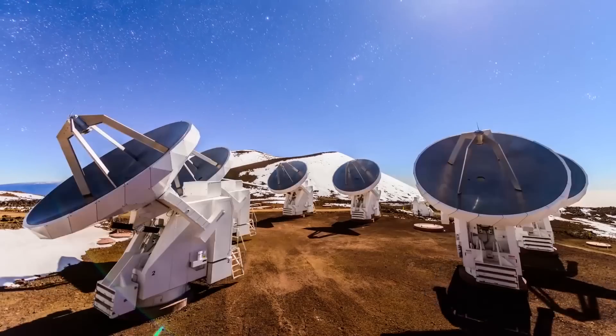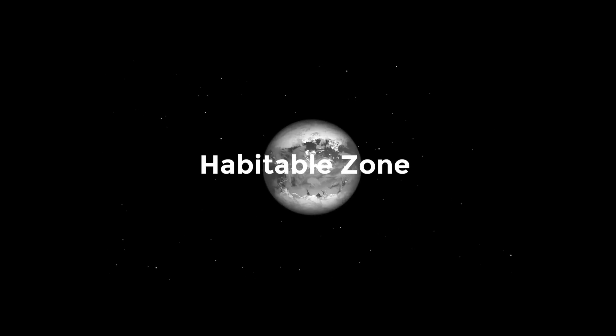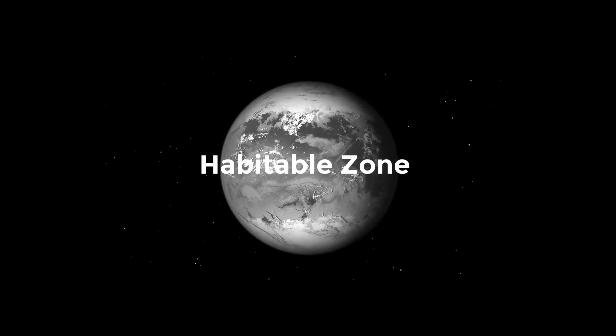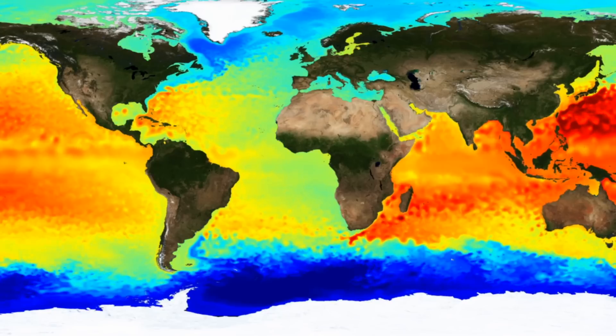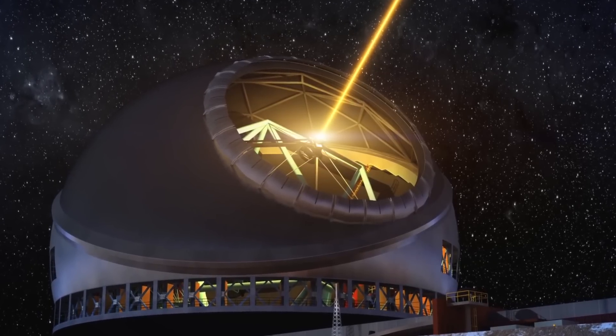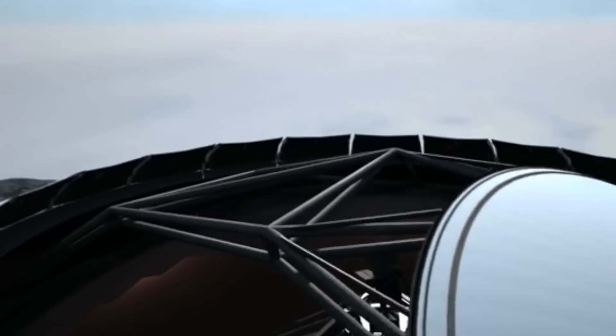TMT will therefore have three times the resolution and detail of existing telescopes. Astronomers will soon be able to identify planets around other stars in the habitable zone, a distance from a star that enables liquid water on the planet's surface, thanks to TMT's tripled resolution.